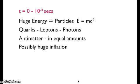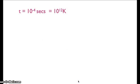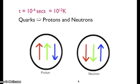At T equals 10 to the minus 4 seconds, the temperature was 10 to the 12 Kelvin, or 1 million million degrees. Quarks formed into protons and neutrons. There are three quarks in each. A proton has two up quarks and one down quark. A neutron has two down quarks and one up quark.